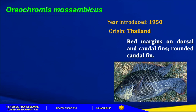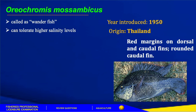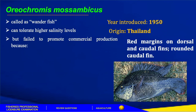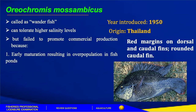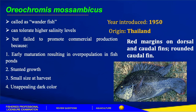Oreochromis mossambicus, or Mozambique tilapia, is also known as wonderfish. It is native to Africa and Asia and was introduced in 1950 from Thailand. However, its culture was discontinued due to unwanted characteristics such as early maturation resulting in overpopulation in fish ponds, stunted growth, small size at harvest, unappealing dark color, and becoming pests in brackish water ponds. This led to a research program at the freshwater aquaculture center of Central Luzon State University in 1974 on monosex male culture and sex reversal of females through hormone treatment of tilapia fry, marking the earliest genetic application to improve tilapia production.